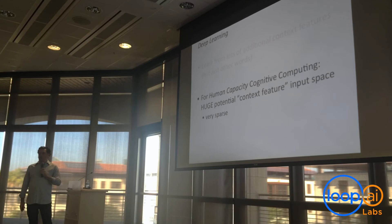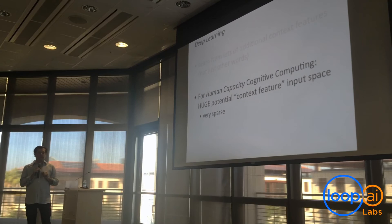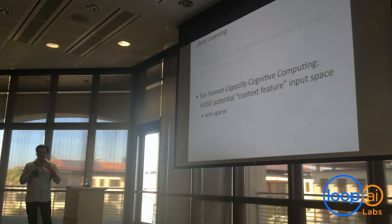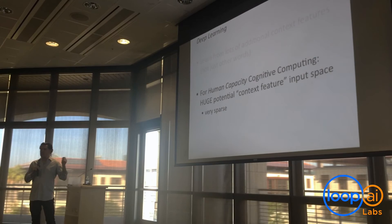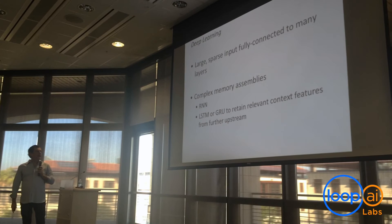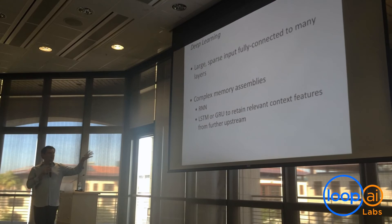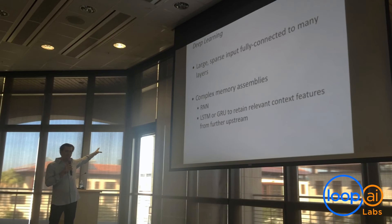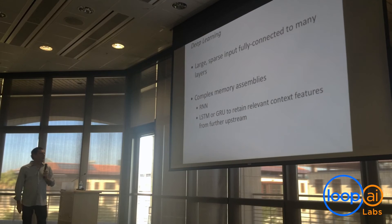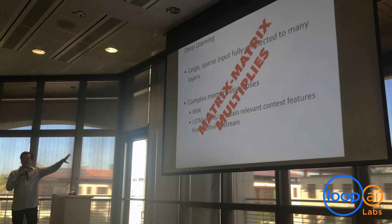My point is that for doing human-capacity cognitive computing, there's a huge potential for putting things into this context feature input space. We have five different senses, with god knows how many neurons feeding into our understanding of things — that's a huge and very sparse input space. So you've got this large sparse input that's going to be fully connected to all of the layers doing your interpretation, and then you've got these complex assemblies. We don't know exactly what the best assemblies are yet, but we have things like RNNs, and you need ways to maintain memory, which is what LSTMs and GRUs help you do — helping you take an abstraction or idea from much earlier and remember it down the line.